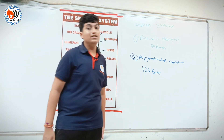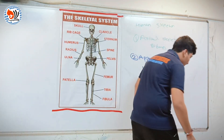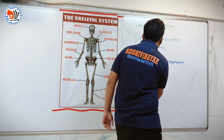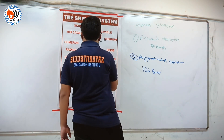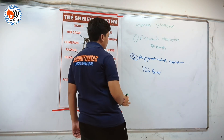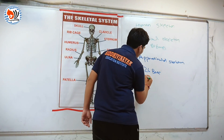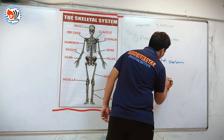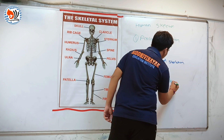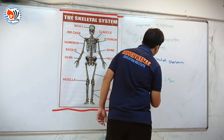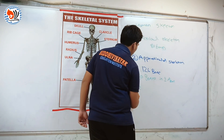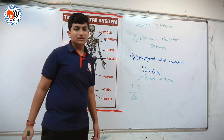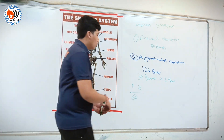There are 14 phalanges in our hand. So in the appendicular skeleton, there are 2 arms with 30 bones each — that's 60 bones in both arms total.